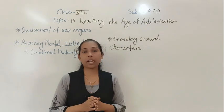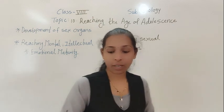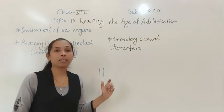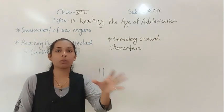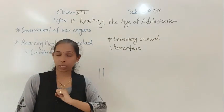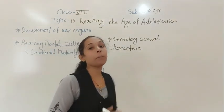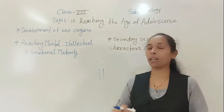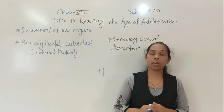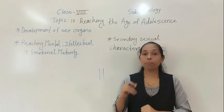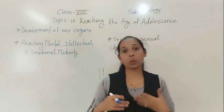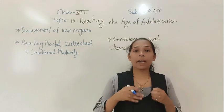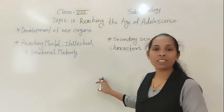There are certain glands which have a duct — we can say they have a pipe-like structure, and with the help of that structure they secrete their secretions into particular body parts. Glands which have ducts, like oil glands, sweat glands, and salivary glands, secrete their secretions into that particular body or gut. But on the other hand, there are certain glands that don't have ducts — their secretions are directly released into the bloodstream.